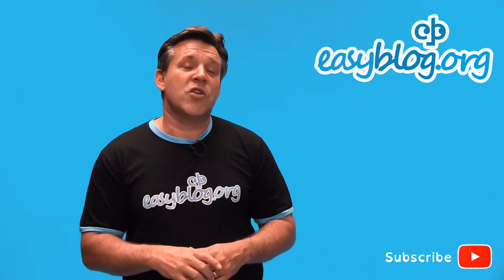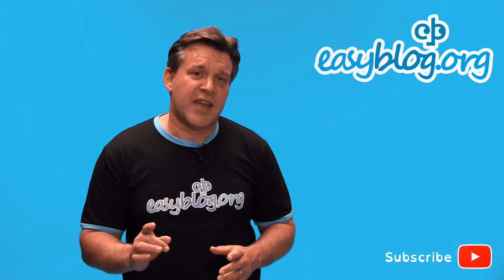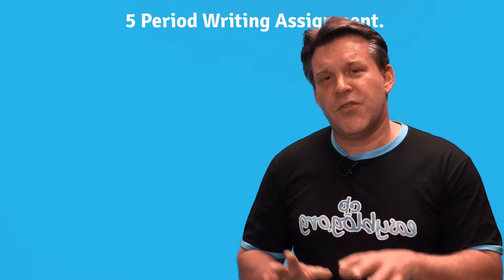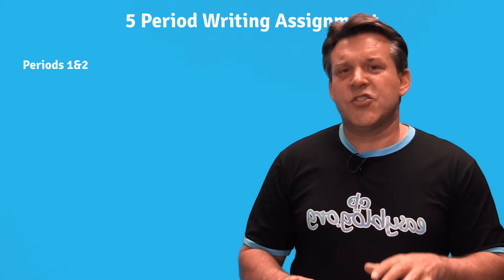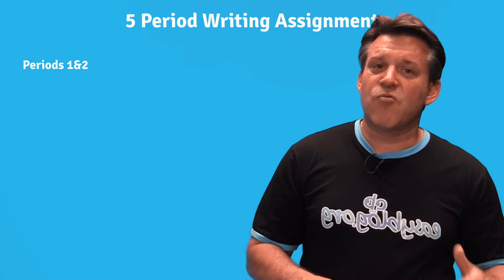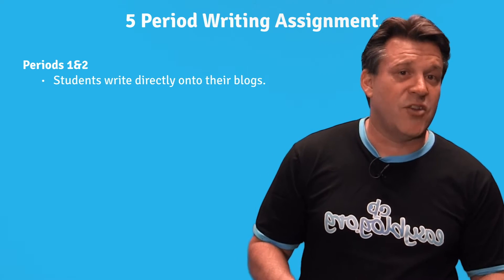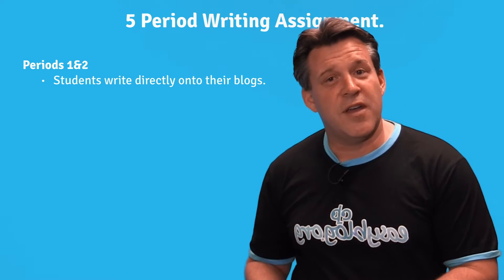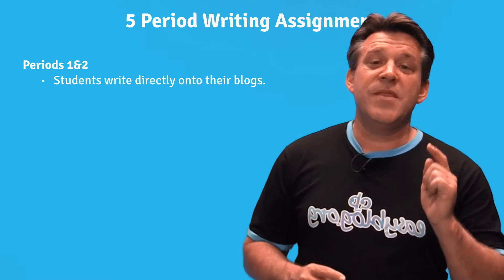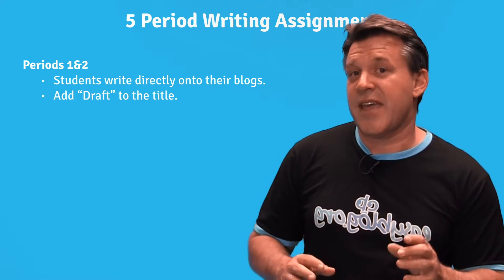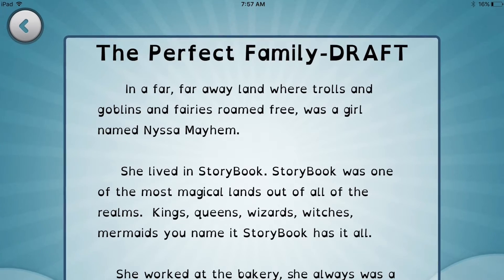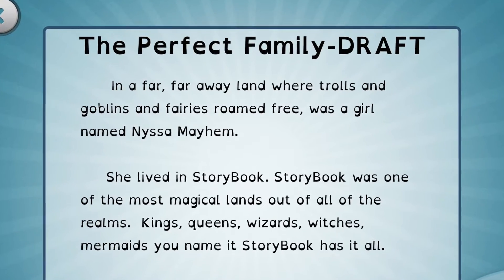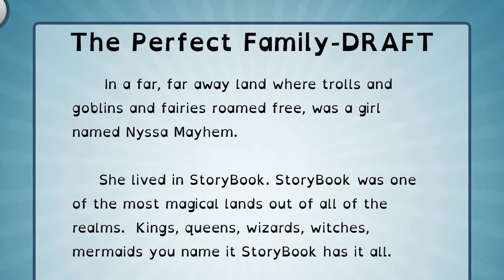Let's look at how we could restructure that. For periods one and two, the students start their writing assignment directly onto their blog. However, in the title, they add 'draft' to make clear that it's not finished yet.